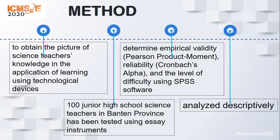The test instrument used was a 10-item essay test in the form of case studies. The problems in the questions are about learning assisted with or using technological devices. The questions were arranged and distributed through online media via Google Form to the research participants. The scoring rubric instrument is polytomous in nature, and the scores range from 0 to 2 according to the level of complexity of the expected answer. Aspects covered in the instrument are the application of learning methods, learning media, learning resource assessment, and student learning outcomes.